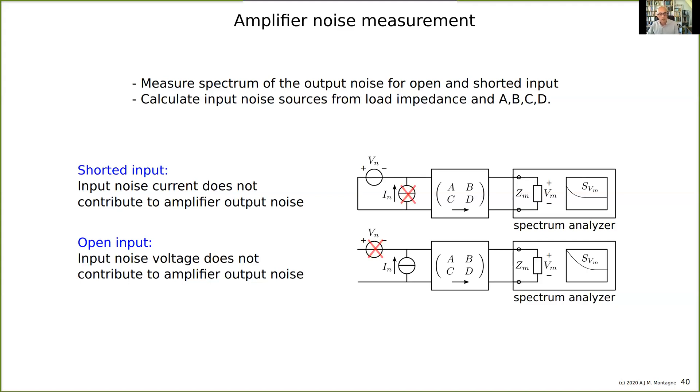For this, of course, we need the parameters ABCD and we need to know something maybe about the impedance, input impedance of the spectrum analyzer if necessary. And then we can determine those sources, and that's why you can find them in data sheets. They can really be measured.